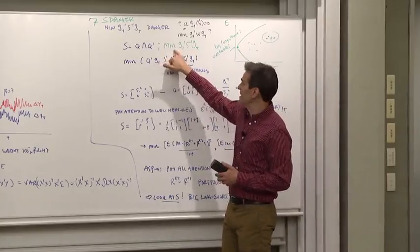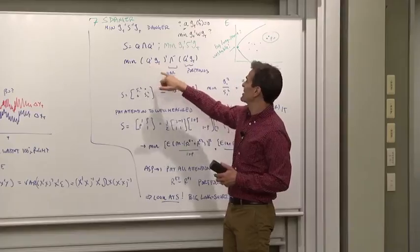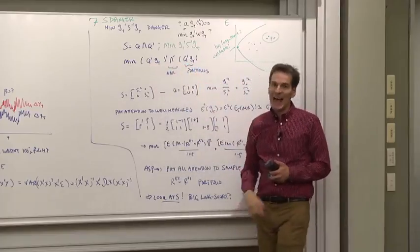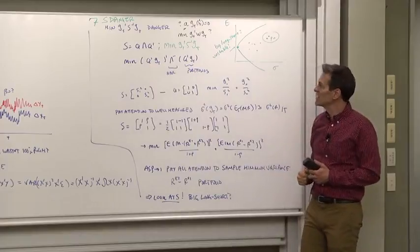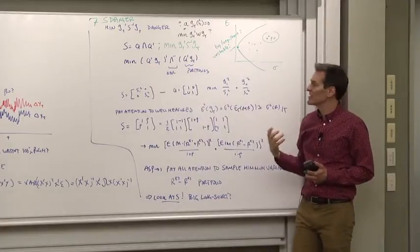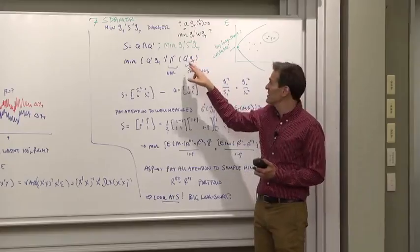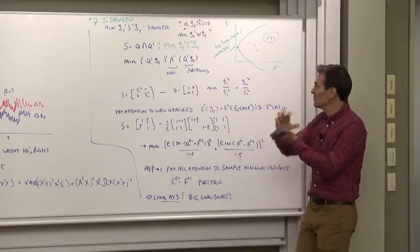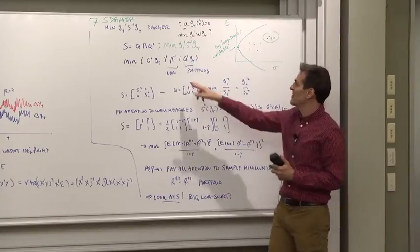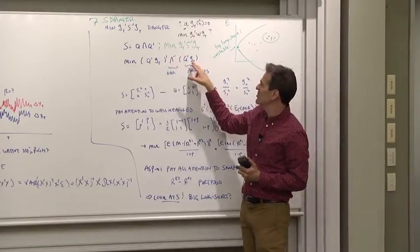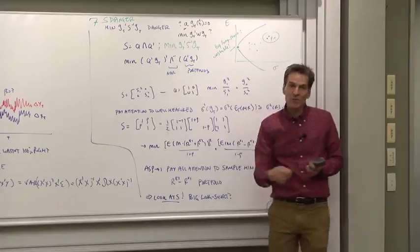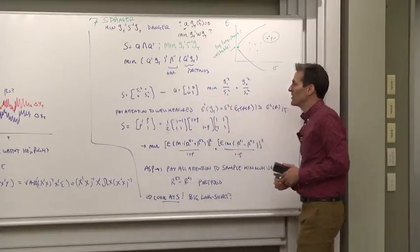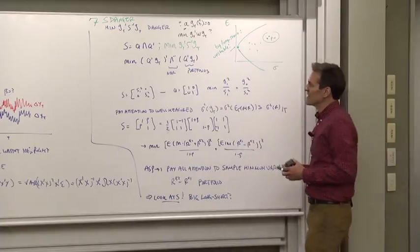If we do that, then the minimization becomes Q prime GT lambda inverse Q prime GT, where this is now a diagonal variance-covariance matrix. So you can see what the S matrix does: it's forming some portfolios, a linear combination of GT evaluated on different portfolios, and then paying attention to those new portfolios in inverse proportion to the variance of the GTs corresponding to those portfolios.